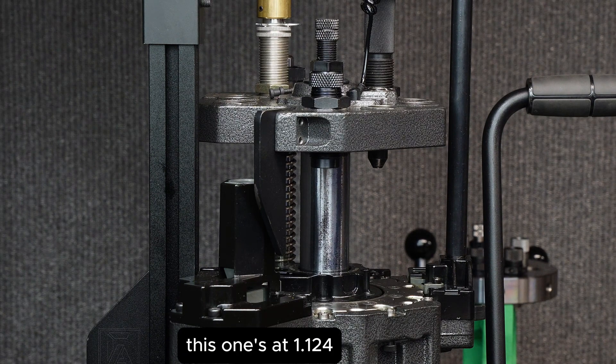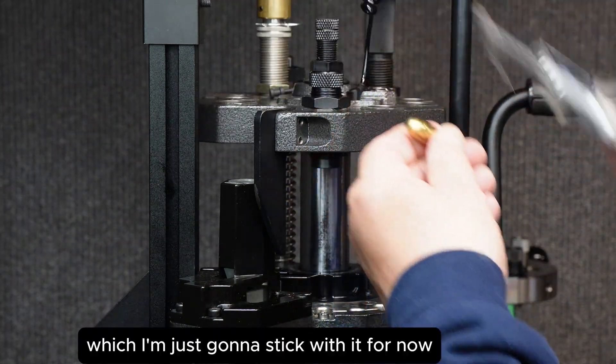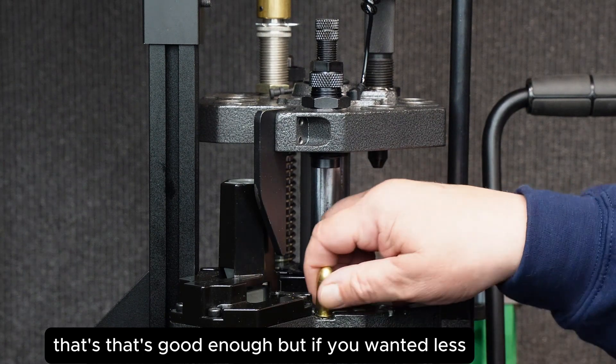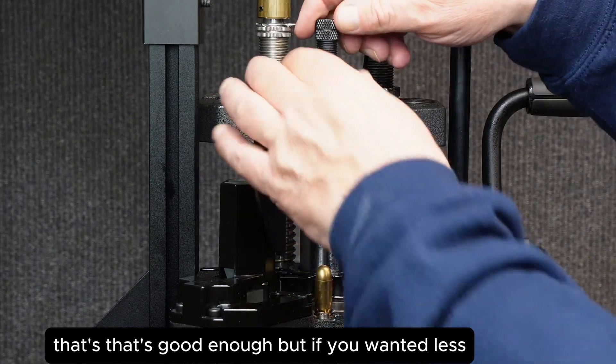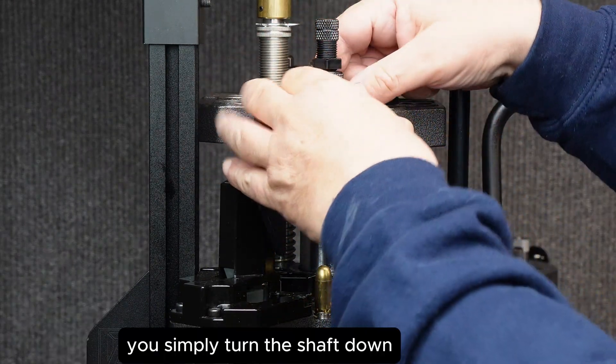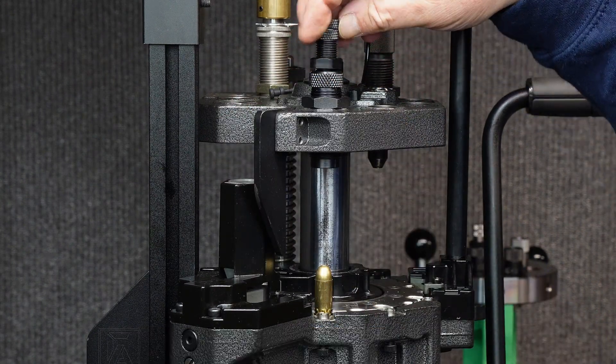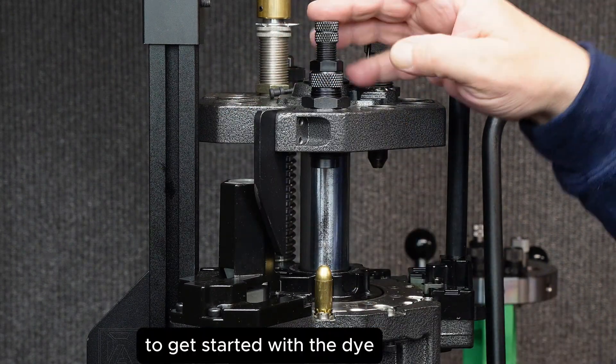This one's at 1.124 which I'm just going to stick with for now, that's good enough. But if you wanted less, you simply turn the shaft down to get started with the die.